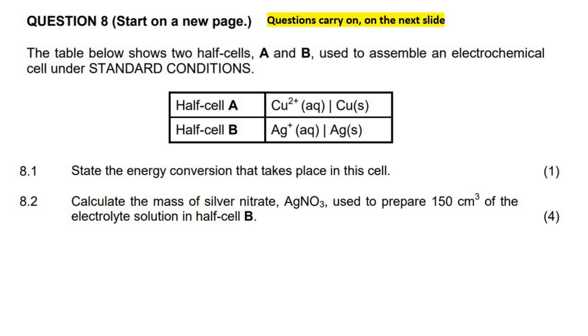The table below shows two half cells, A and B, used to assemble an electrochemical cell under standard conditions. State the energy conversion that takes place in the cell.